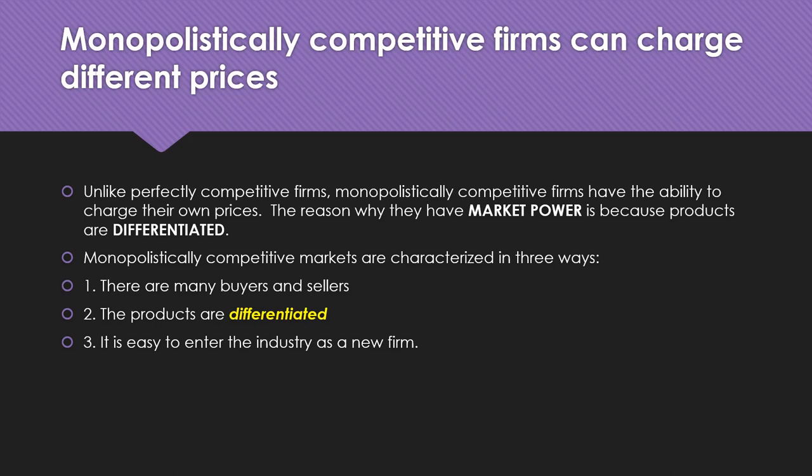It's still easy to enter the industry as a new firm — not easy to be successful, but easy to enter. With this differentiation, the big difference between perfect competition and monopolistic competition is that a firm in a monopolistically competitive market has the ability to set its own price. They have market power through differentiation, allowing them to set a profit-maximizing price rather than taking the market equilibrium price.